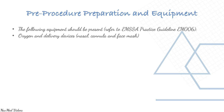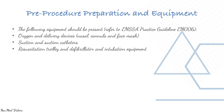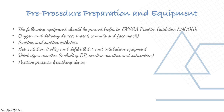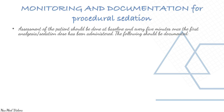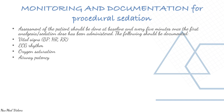Pre-procedure equipment for procedural sedation should include: oxygen and delivery devices, suction and suction catheters, resuscitation trolley and defibrillator, intubation equipment, vital sign monitor, positive pressure breathing device, appropriate-size oral airway, and reversal agents. Patient assessment should be done at baseline and every five minutes once the first analgesia or sedation has been given.